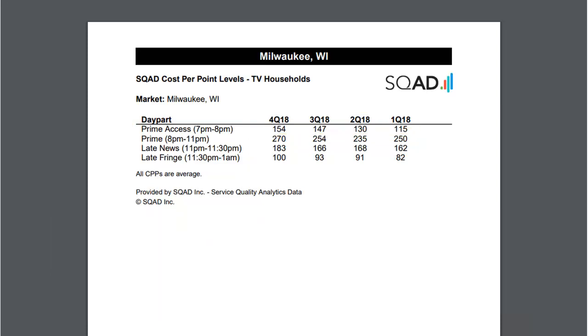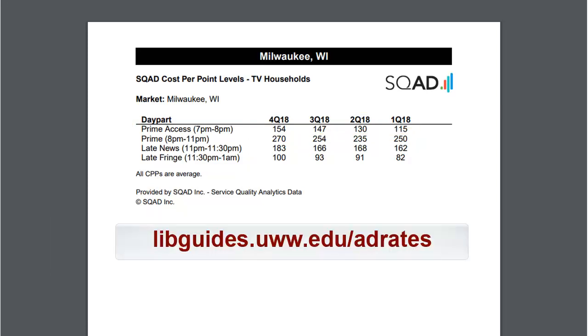For more information on Squad CPP levels and how to find Nielsen ratings, check out the How to Find Advertising Rates Guide. Don't hesitate to contact the library with any questions.